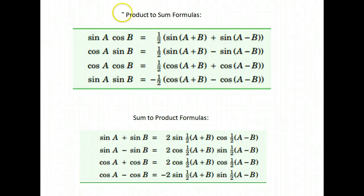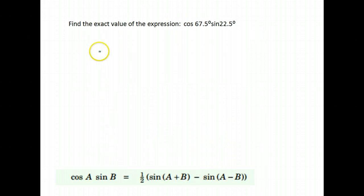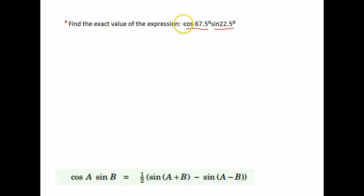We are going to do some work with the product-to-sum and sum-to-product formulas for trig identities, and we are going to use them to find exact values. So let's start with this first one — it wants us to find the exact value of an expression. We're going to try and put this into a product-to-sum identity, which we have down here.